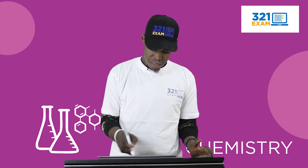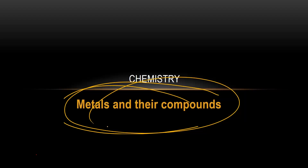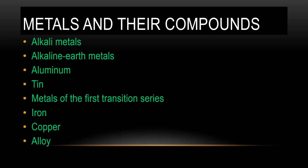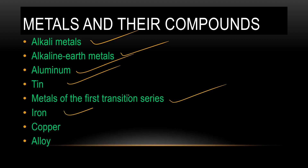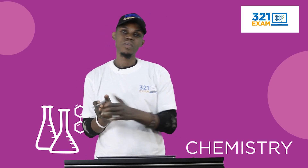Now what are some topics on the metals and compounds? We're going to talk about alkali metals, aluminium, metals of the first series, iron, copper and alloy. Remember we are working directly with your JAMB syllabus. We are not putting in anything that is not part of your JAMB.